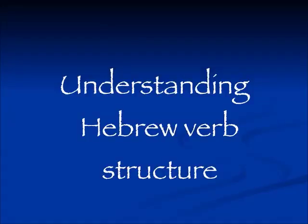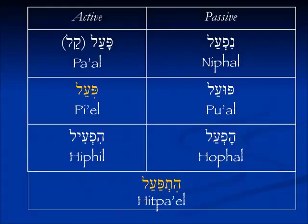Shalom. Today we have come to the last of the participle lessons in understanding Hebrew verb structure. We have already covered all the binyanim for the participle, but when we were talking about the Piel I noted that there was a special case if the Piel was hollow, and it also happens in the Hitpa'el, so we're going to examine that.